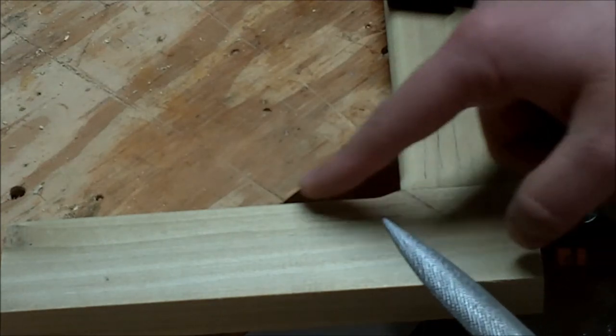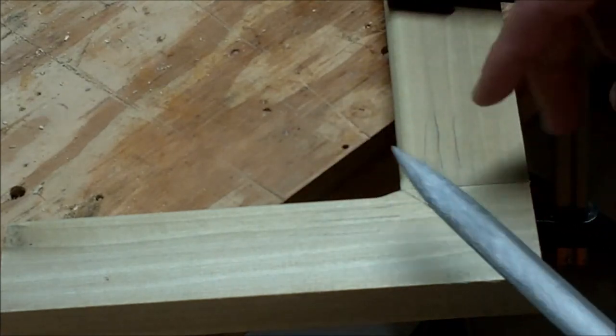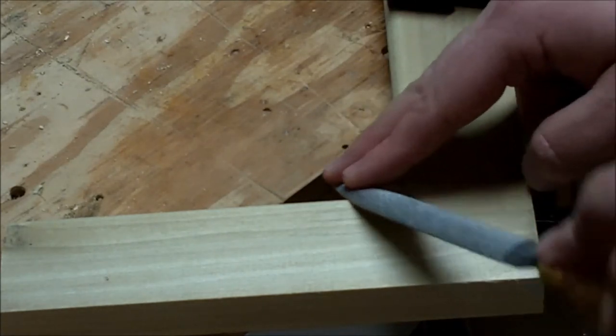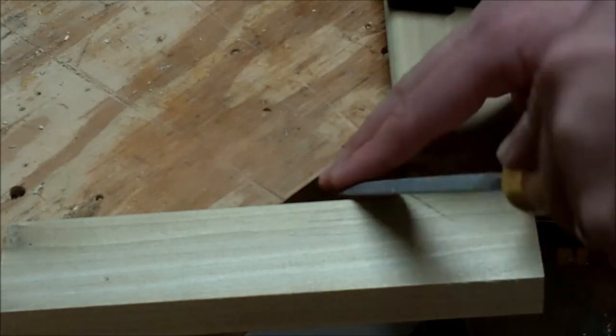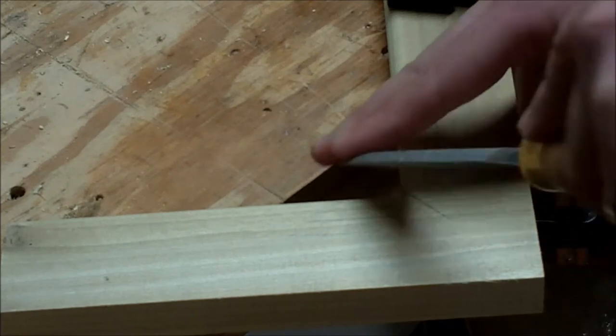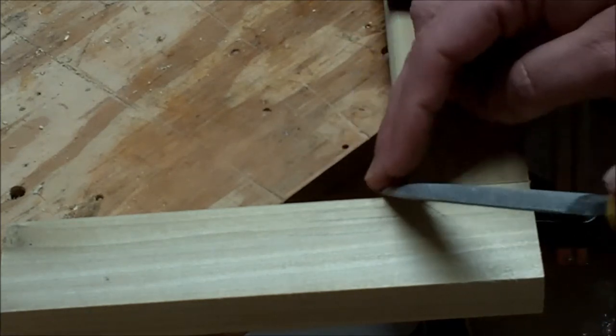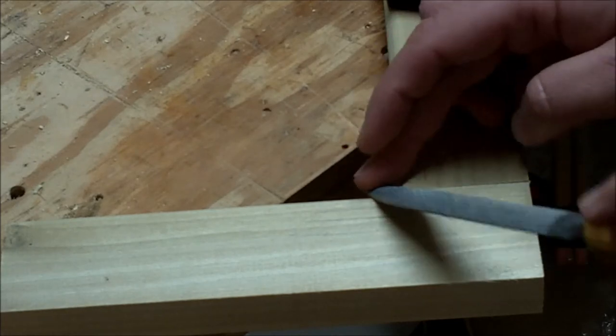How we're going to establish this is we've already got our roundover established from the router bit, and we're just going to follow that line using the rasp, just taking light cuts and curving that inwards. Now this rasp is stitched all the way to the edge, so it's going to really allow me to get into that 45-degree corner quite nicely.